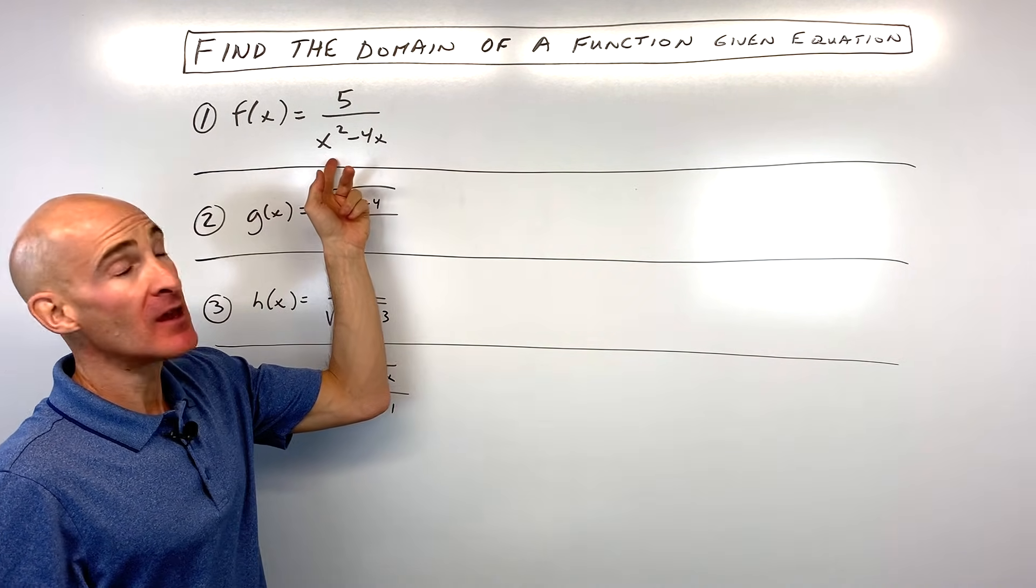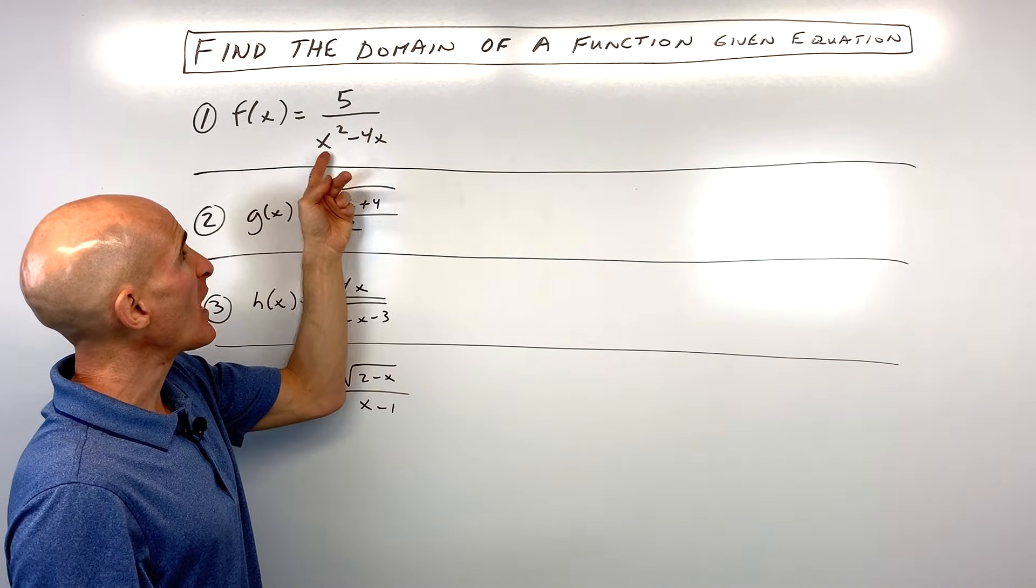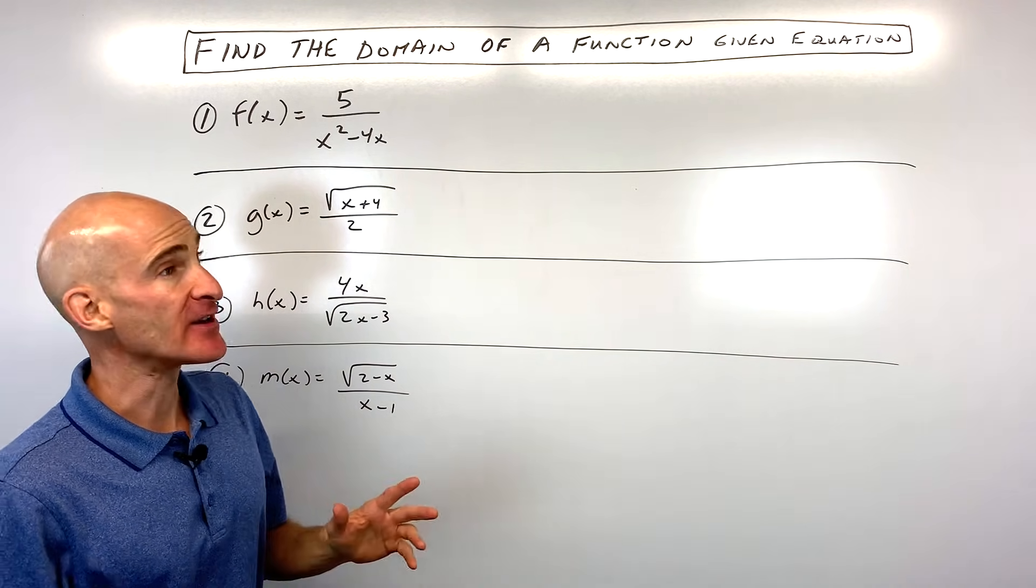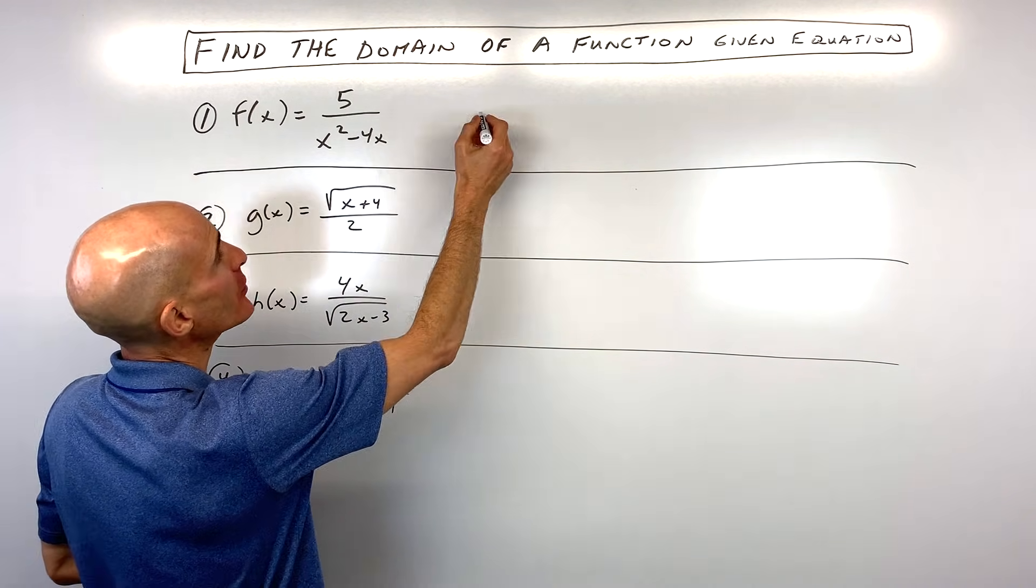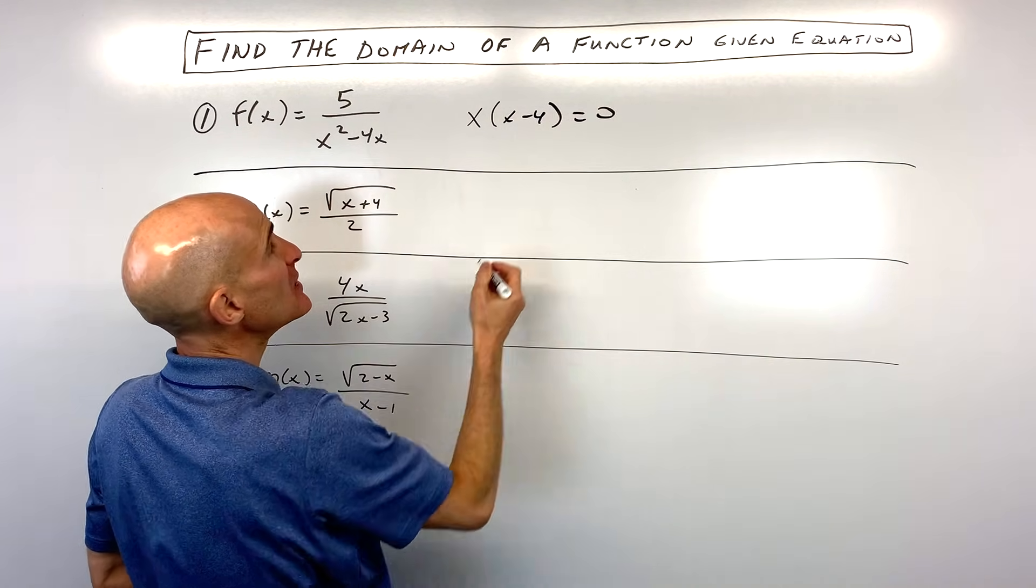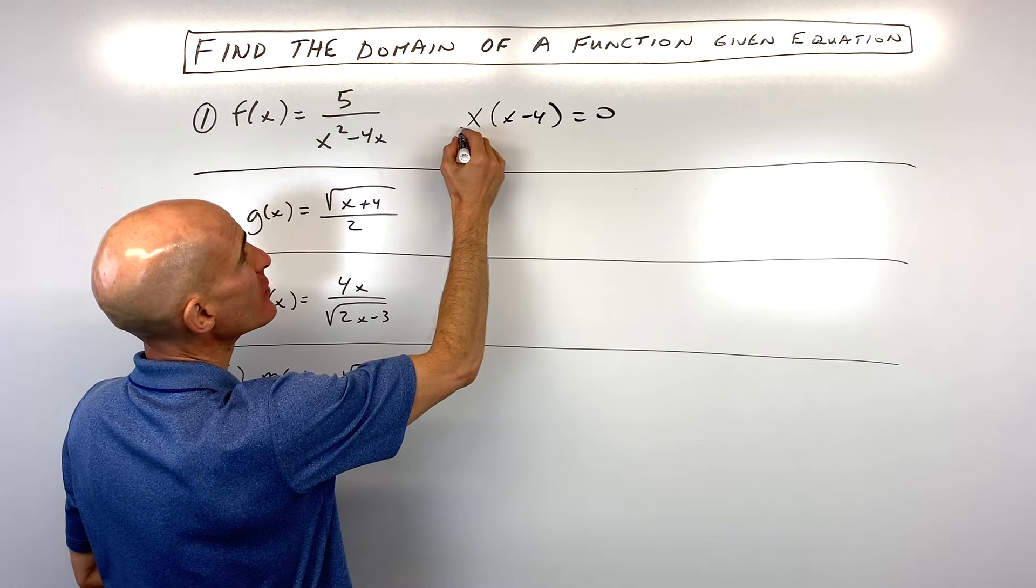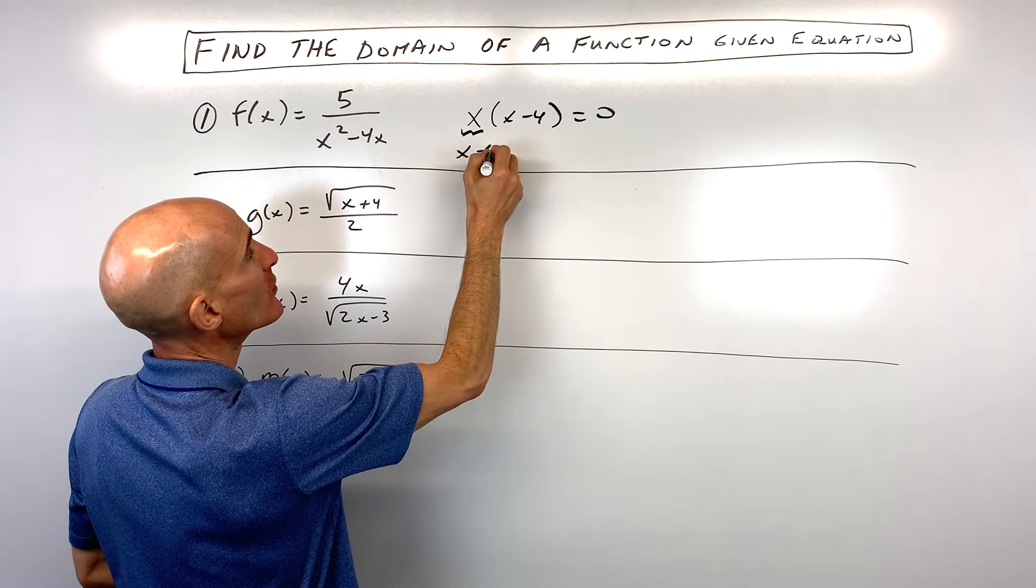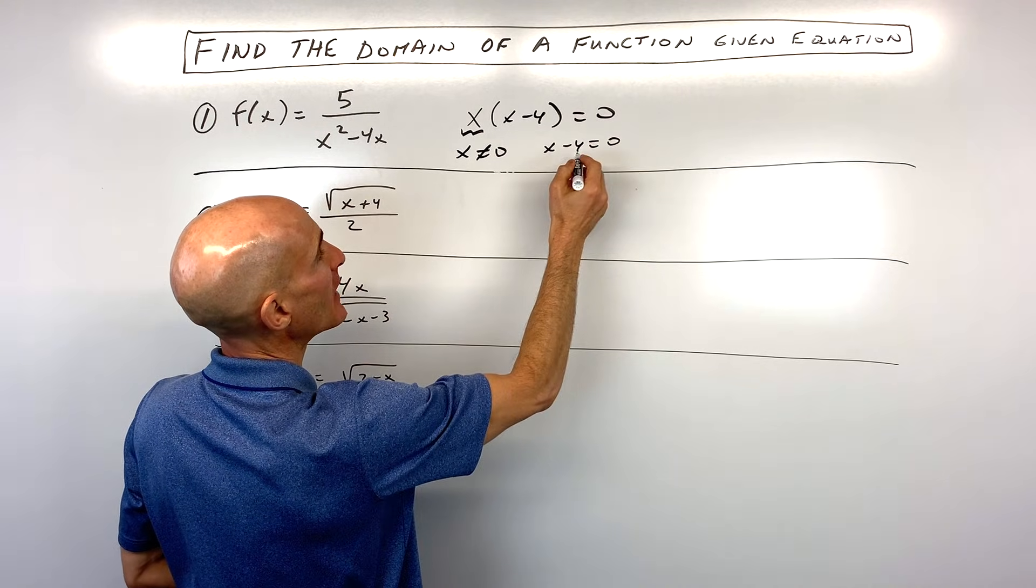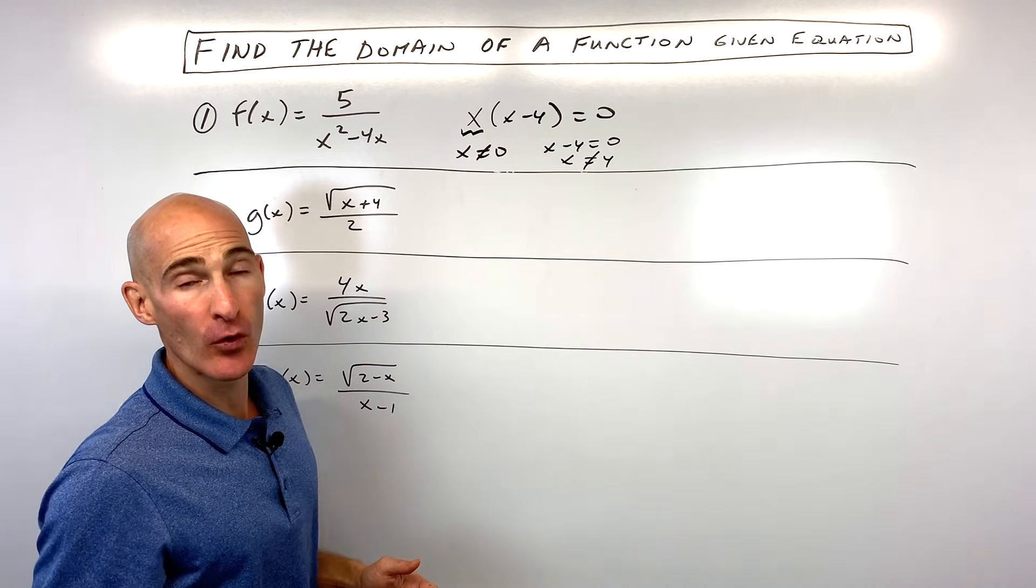So for number one, the first thing that I notice here is that we have a fraction. And remember, we cannot divide by zero. That's undefined. So what I'm going to do is I'm going to take that denominator, and I'm going to factor it and set each factor equal to zero. So you can see here, if I set x to zero, we know that x cannot equal zero. And if I set x minus four equal to zero and add four to both sides, we can see that x cannot be four.